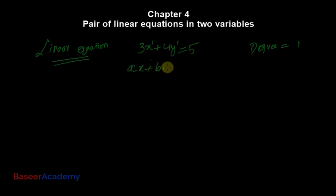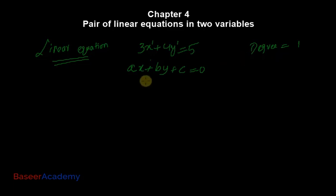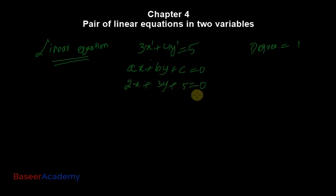The general form of a linear equation in two variables is ax + by + c = 0, where a, b, and c can be any number. For example, if a = 2, b = 3, c = 5, then 2x + 3y + 5 = 0 is obviously a linear equation in two variables.